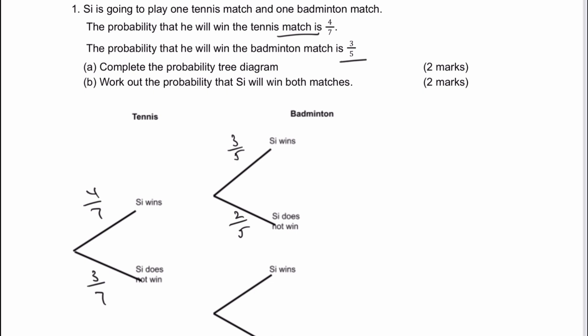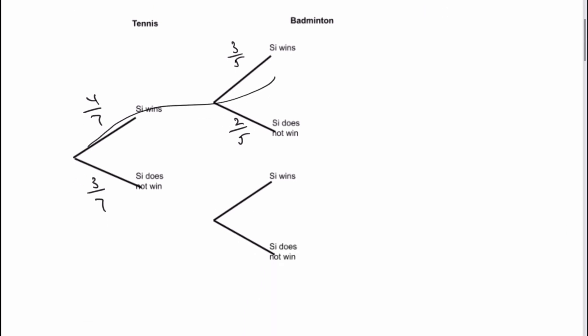Now the purpose of the second outcomes there is we've got if Si wins the first match, that would be that series of outcomes. But if he loses the first match, then it will be that series of outcomes. So we write exactly the same three out of five and two out of five.